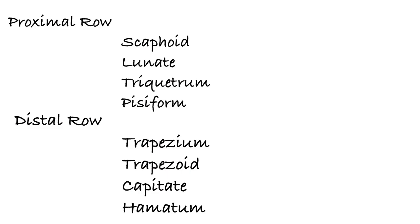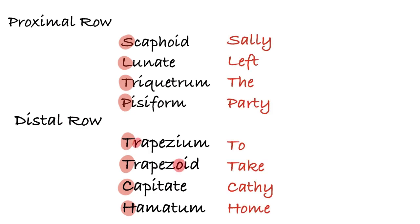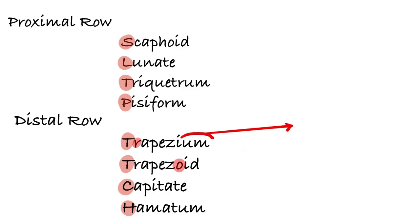Scaphoid, lunate, triquetrum, pisiform—these are proximal row. Trapezium, trapezoid, capitate, and hamate—these are distal row. Let's take the initial letters and remember this mnemonic: Sally Left The Party To Take Cathy Home. Also pay attention: trapezium word has U and M letters, which is similar with thumb word, so you can remember trapezium is on the side of thumb. Carpals are named according to their shape.